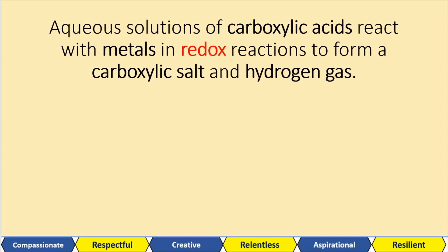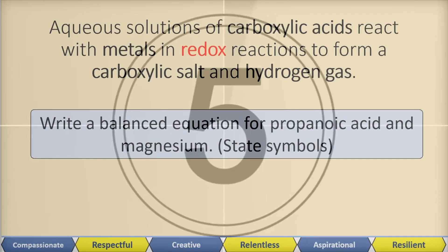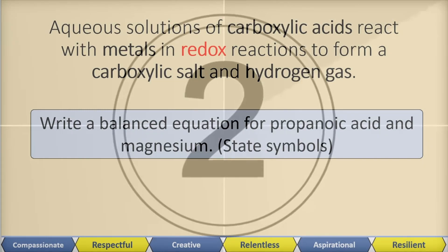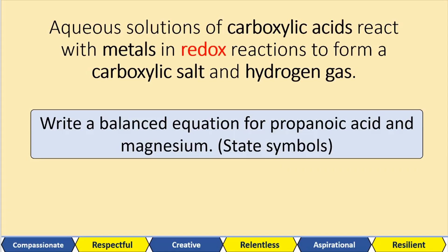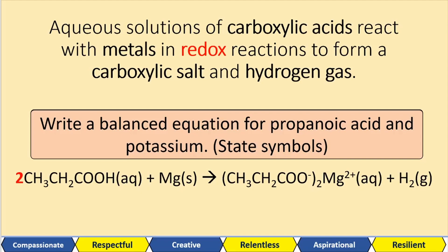Aqueous solutions of carboxylic acid react with metals in redox reactions to form a carboxylic salt and hydrogen gas. Write a balanced equation for propanoic acid and magnesium, including state symbols. Magnesium is in group two, and the carboxylate is only a minus-one ion, so you need two lots of it. We balance two moles of propanoic acid with one mole of magnesium to give us the salt. Now write a balanced equation for propanoic acid and potassium, including state symbols.